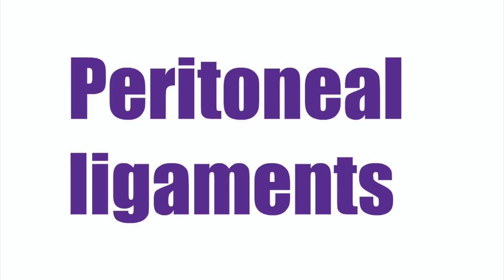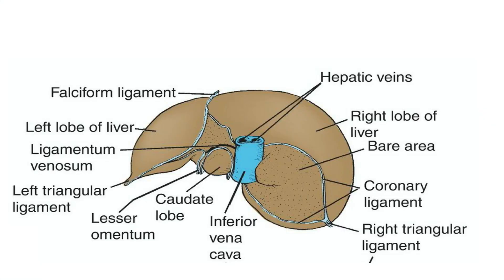Peritoneal ligaments are two-layered folds of peritoneum that connect solid viscera to the abdominal walls. The liver connects to the diaphragm by the falciform ligament, the coronary ligament, and the right and left triangular ligaments.